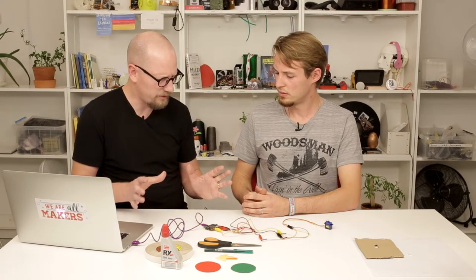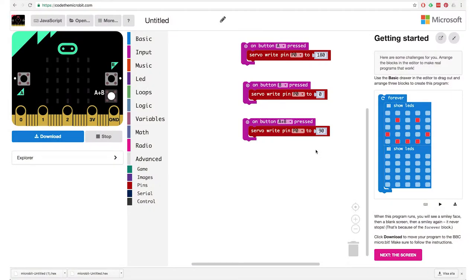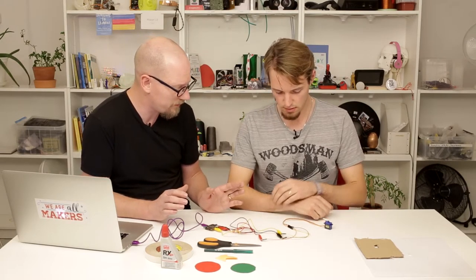Where would I start to look? We can start looking at the programming. I'll go back to the code and have a look. Here I've done 'button A pressed servo write to pin 0 to 180 degrees' and 'button B pressed servo write pin to 0 to 0'. That seems right. It's the same with the A plus B, 0 to 90. That looks good, I don't see any problem there.